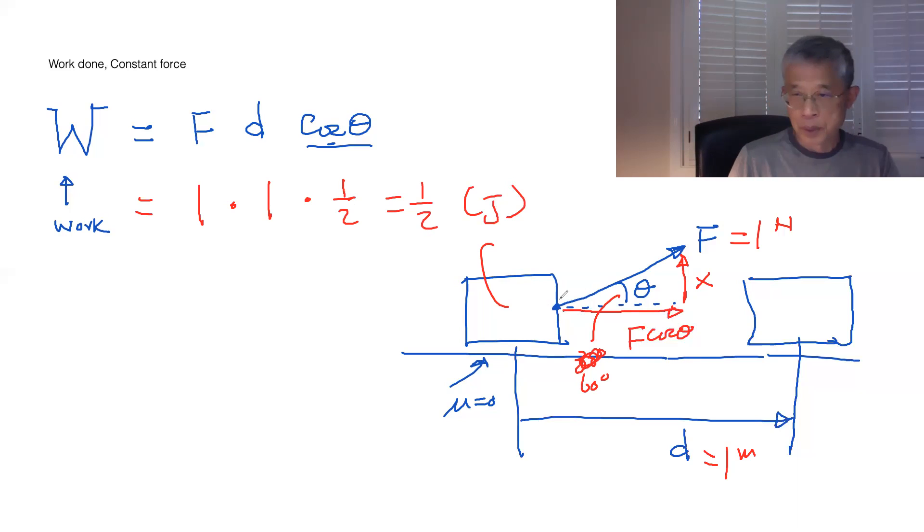So that's going to give you one half joule. Right? So if you apply a force like that, with an angle like that, and then displacement is one, then you're going to get that. So that's the definition of work in a simple way.